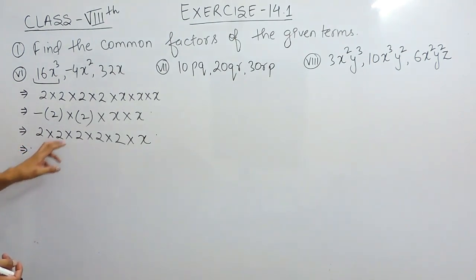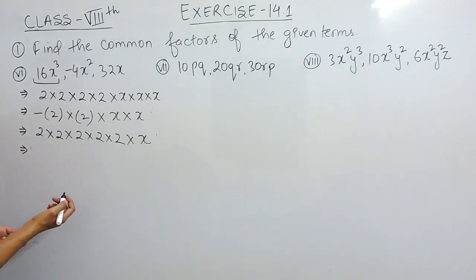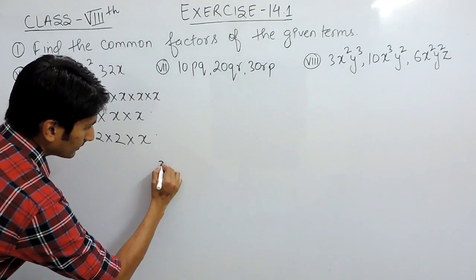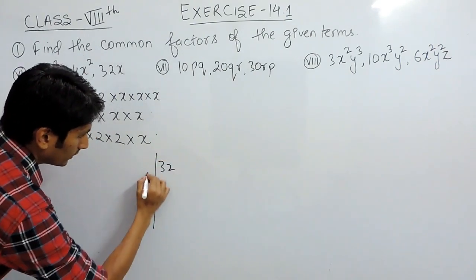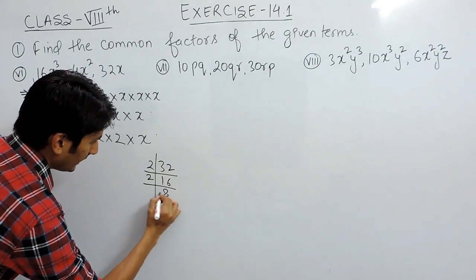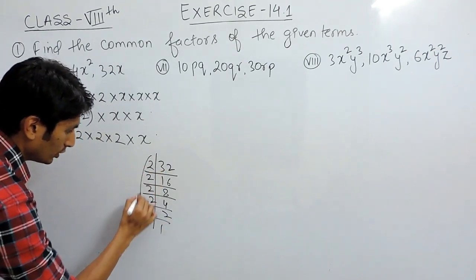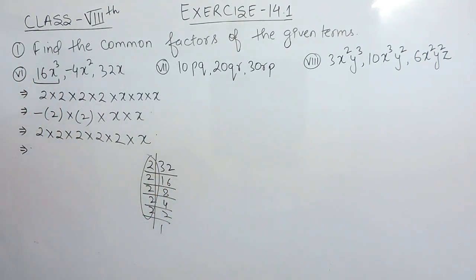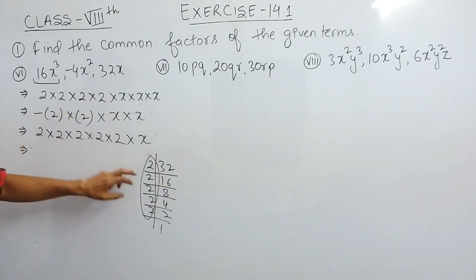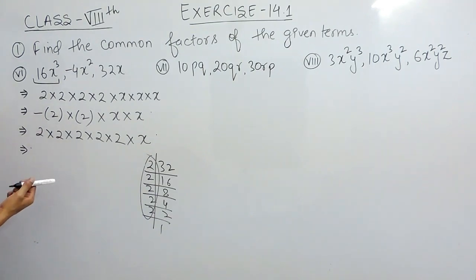Now, if you are not able to find the factor directly, you can find the factors of 32 by dividing: first by 2 gives 16, by 2 gives 8, by 2 gives 4, by 2 gives 2, and 2 ones are 2. So the factors of 32 are 2 multiplied five times. This is how we convert the terms into factor form.